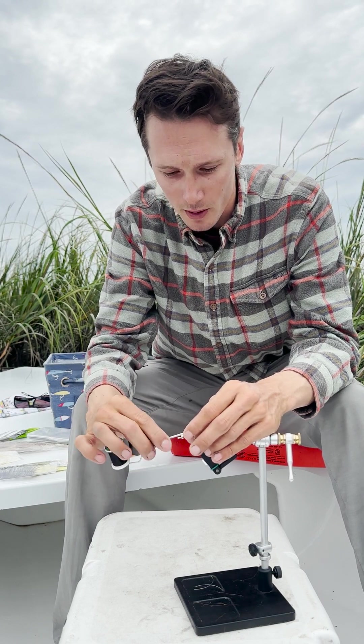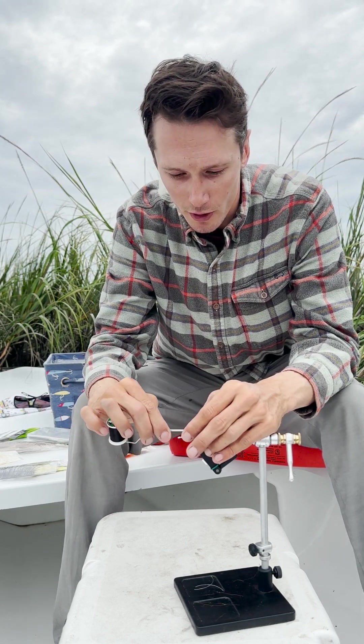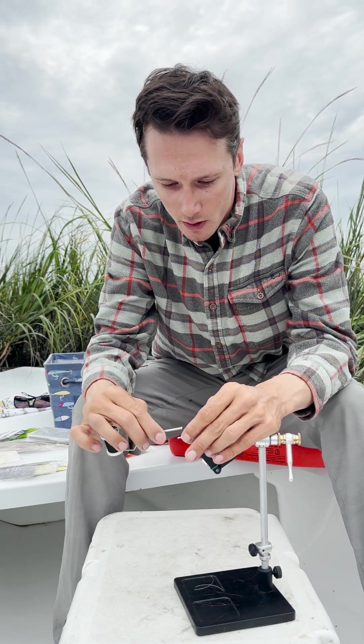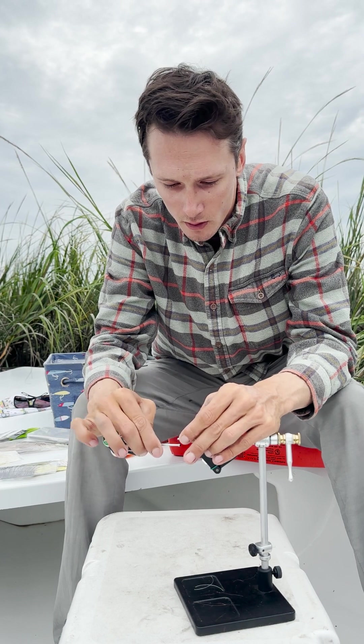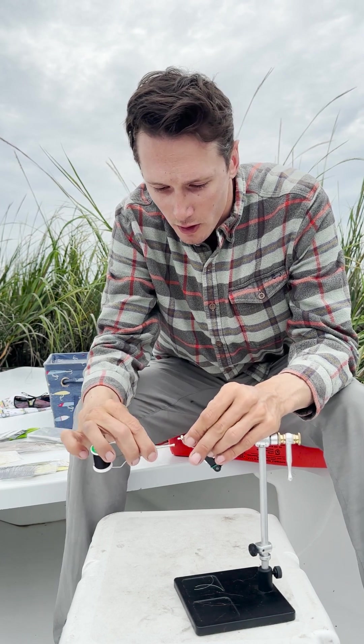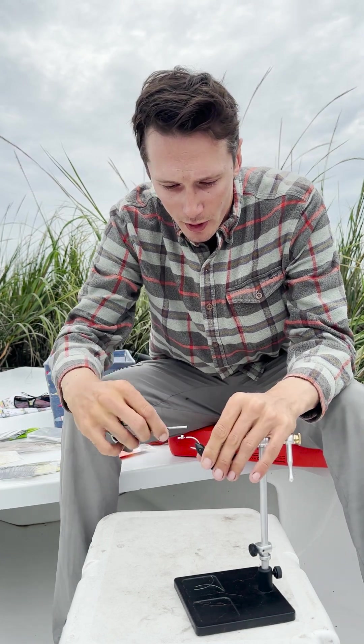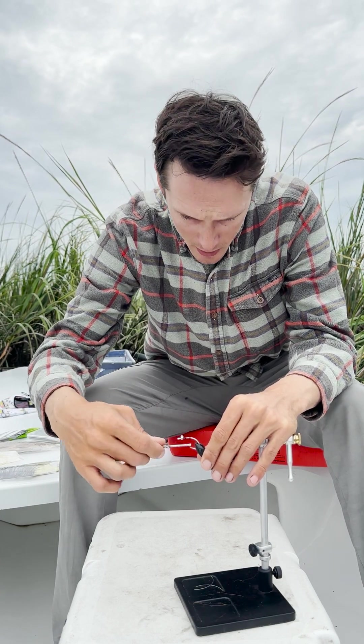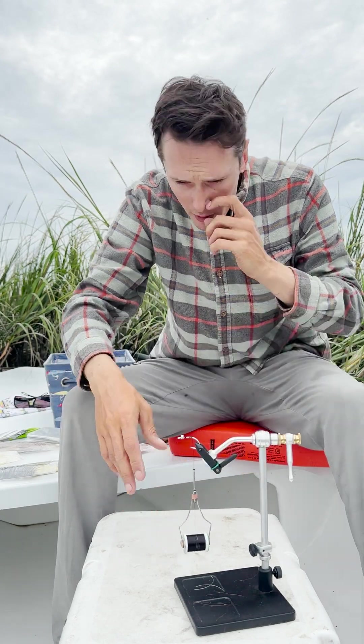Just doing X wraps over those, then some underneath to keep those nice and secure. Okay, that's good for now, probably go back and tighten those up in a minute here. Just do thread wraps down to about where the hook shank starts to bend.